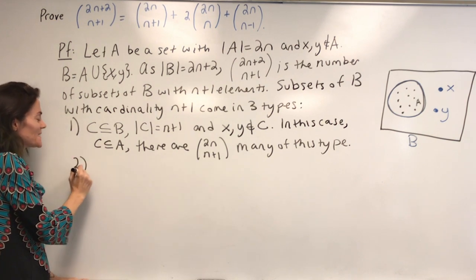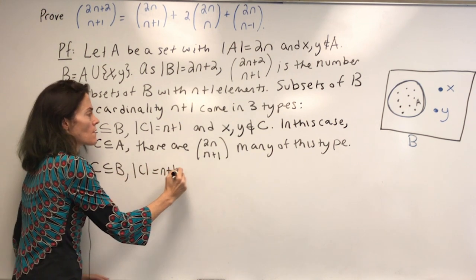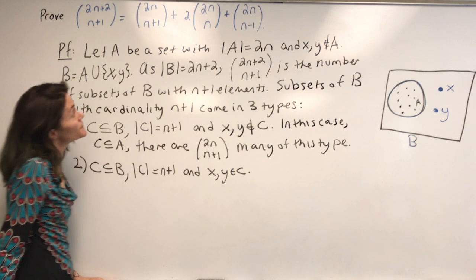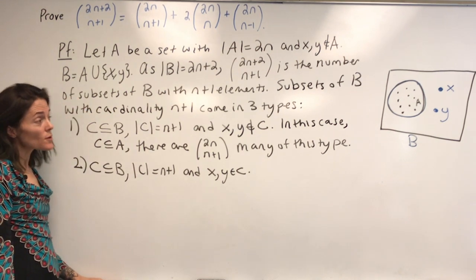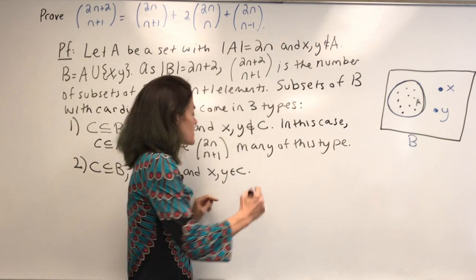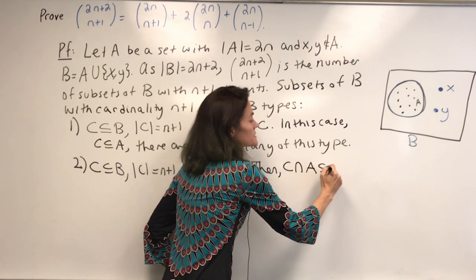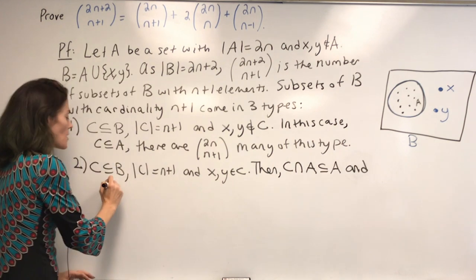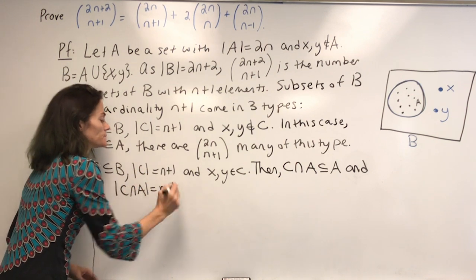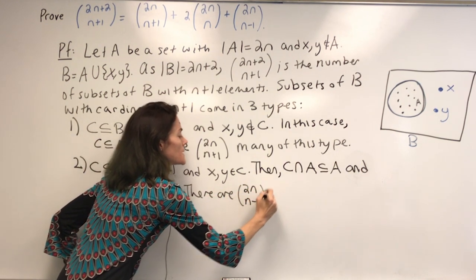The second type: C could contain both x and y. Both of these are in C, so that's two of the elements of C. Then C intersected with A is a subset of A with cardinality n minus 1 — two less than n plus 1. There are 2n choose n minus 1 many subsets of this type.